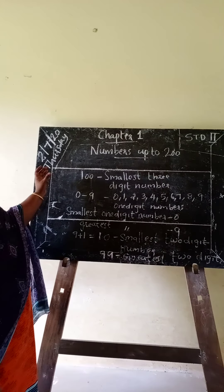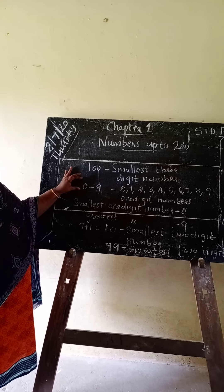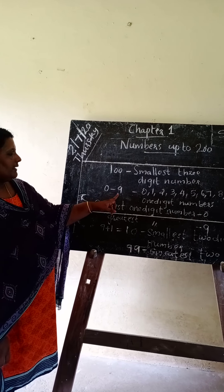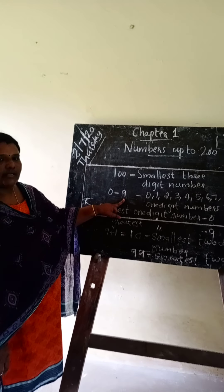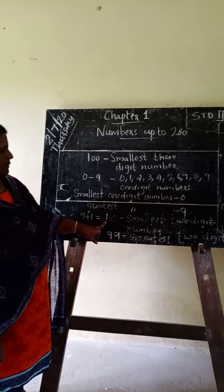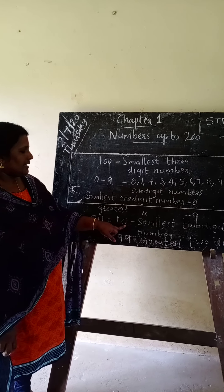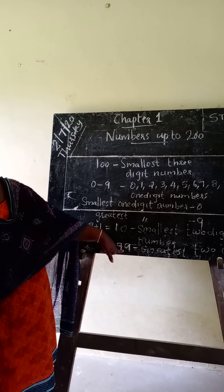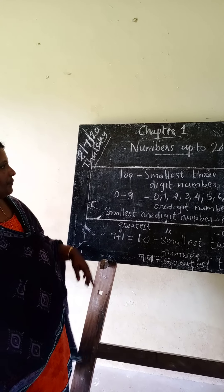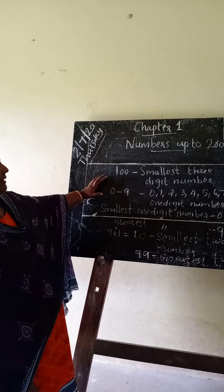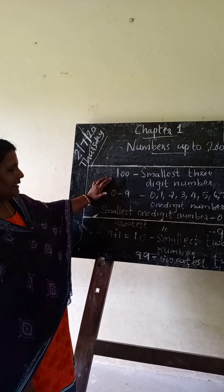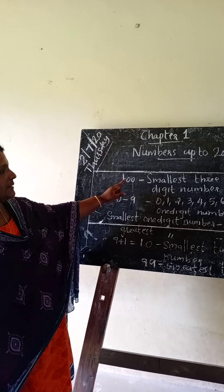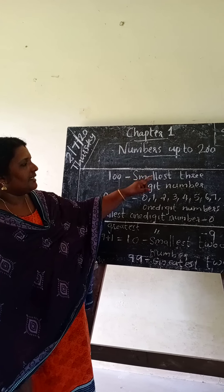The smallest 1-digit number is 0. The greatest 1-digit number is 9. The smallest 2-digit number is 10. The greatest 2-digit number is 99. 99 plus 1 equals 100, which is the smallest 3-digit number.